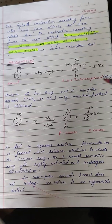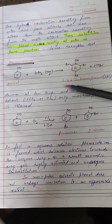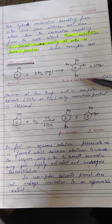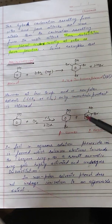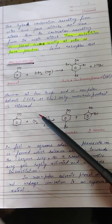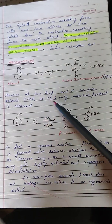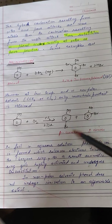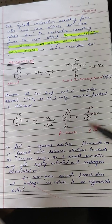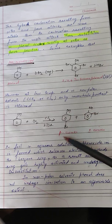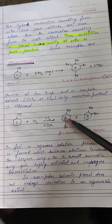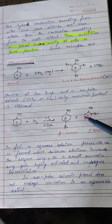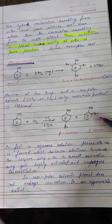We get yellow crystalline precipitates of 2,4,6-tribromophenol. However, at low temperature and in non-polar solvents like carbon tetrachloride or carbon disulfide, only the mono-halo product is obtained — a mixture of ortho-bromophenol and para-bromophenol.